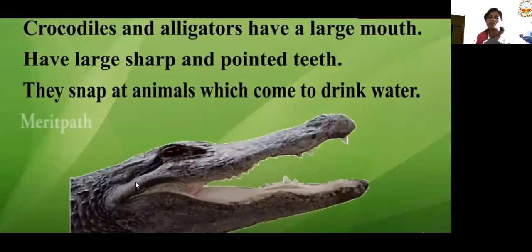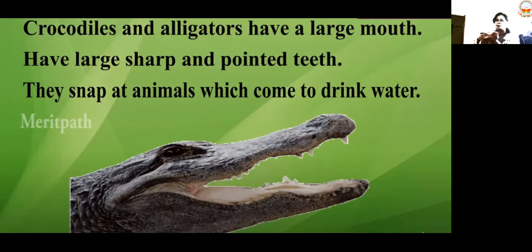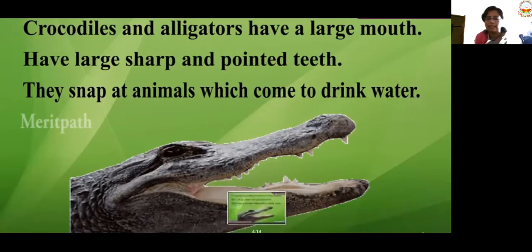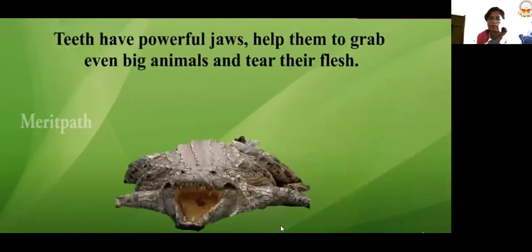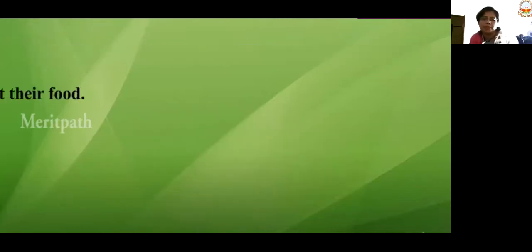Crocodiles and alligators have a large mouth with large, sharp, pointed teeth. They snap at animals which come to drink water — they just open their mouth and snap at them. With those large, sharp, pointed teeth, it becomes difficult for the animals they have caught to move anywhere. Crocodiles eat a lot of fish. Their pointed jaws help them grab even bigger animals and tear their flesh.